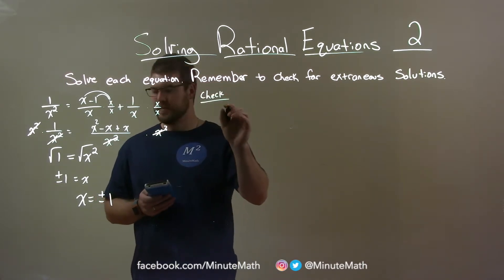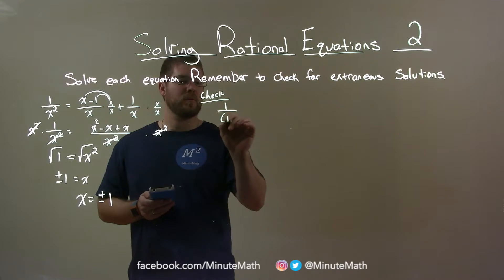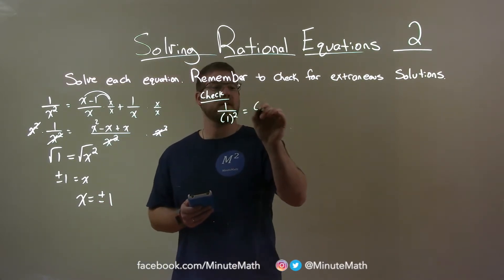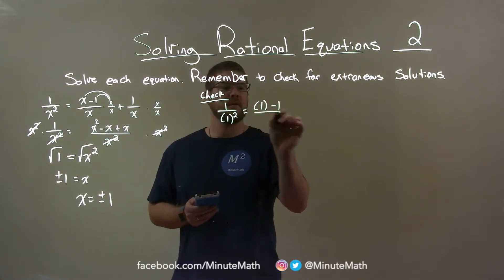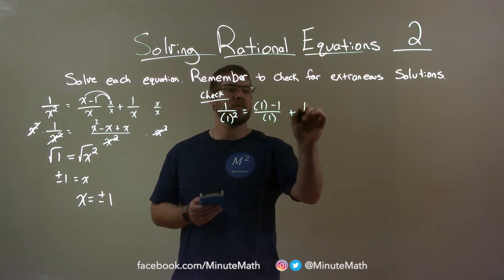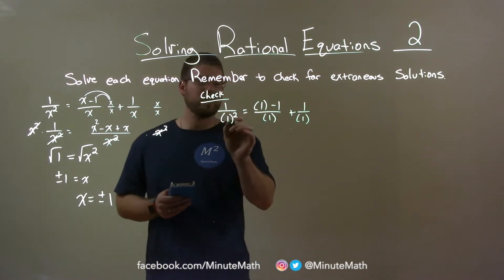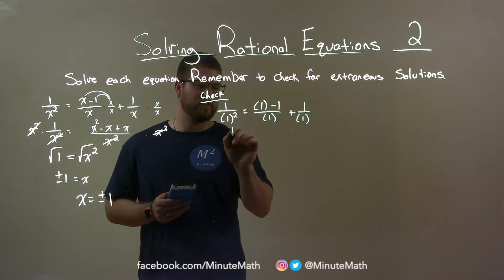Let's go 1 first. 1 over 1 squared. Now be careful, I probably will make a mistake with my ones, but I always make those little mistakes. 1 in for every x of the original equation. 1 squared is 1. 1 over 1 is 1.